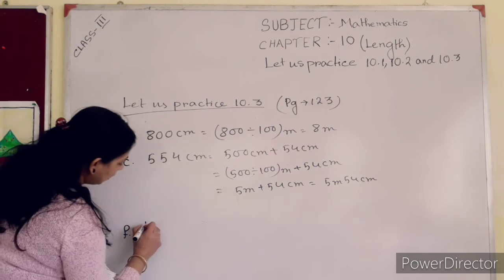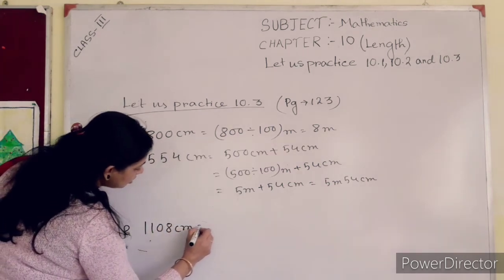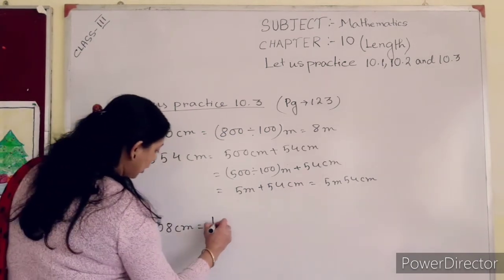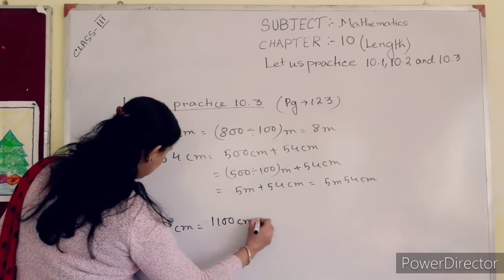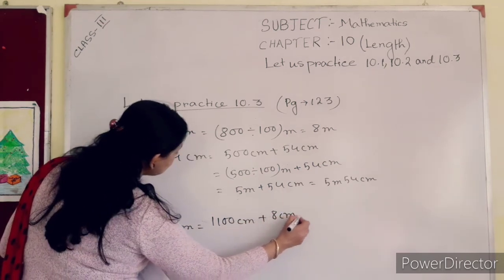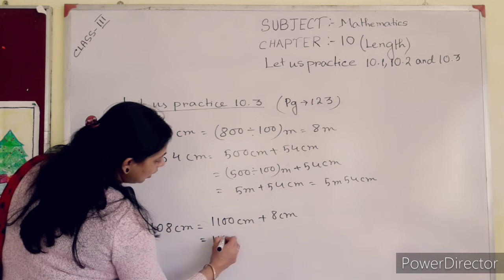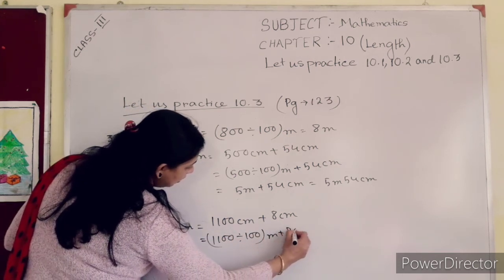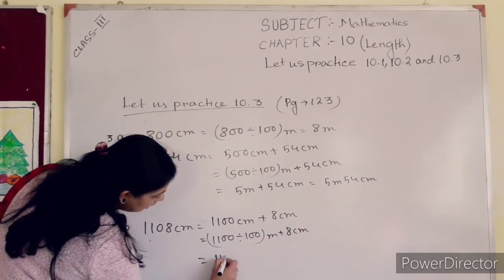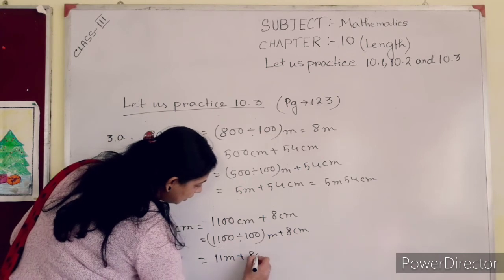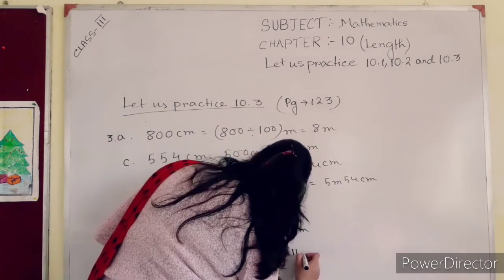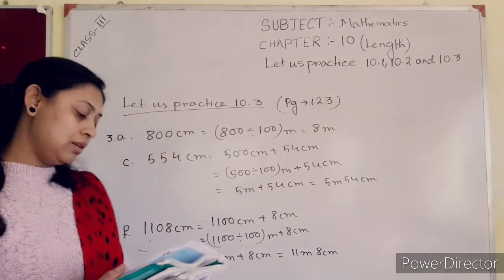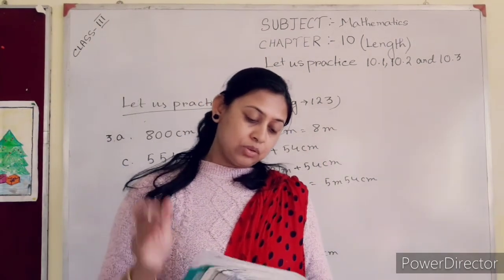Number D: 1108 centimeter — it is more than 100 centimeter, so express this into meter and centimeter. 1100 centimeter + 8 centimeter = 1100 ÷ 100 + 8 centimeter = 11 meter + 8 centimeter = 11 meter 8 centimeter.